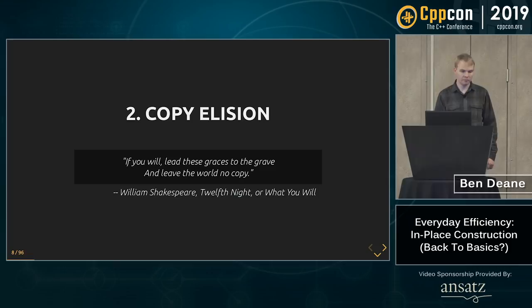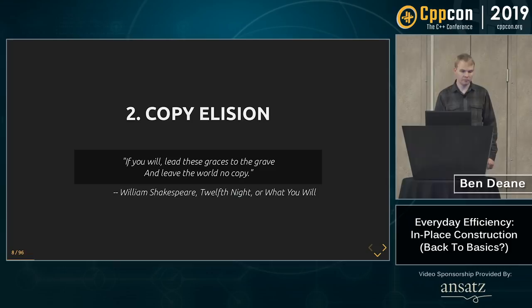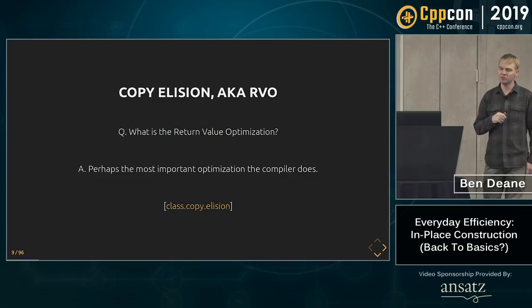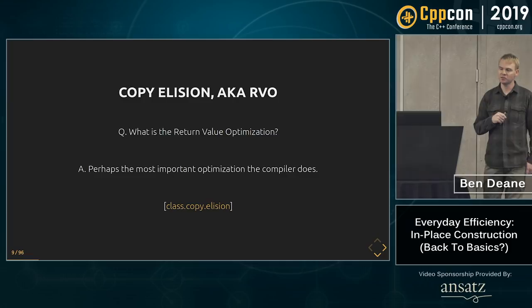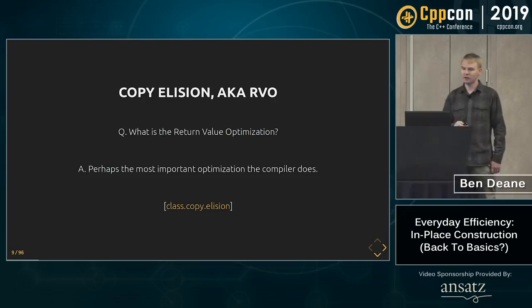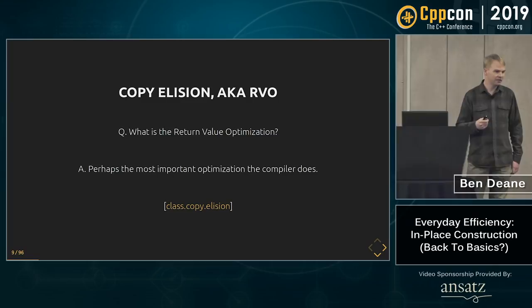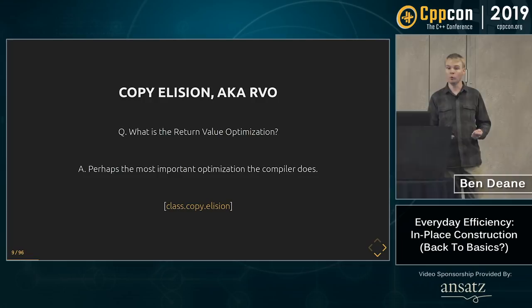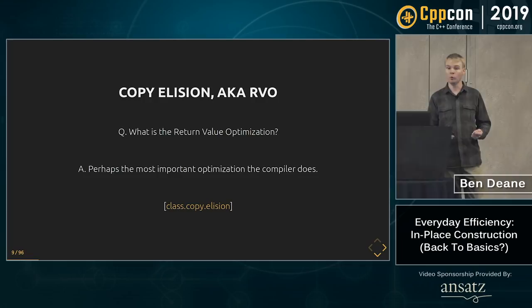RVO is probably the most important optimization your compiler does. So important that even though it's only been mandated on rvalues since C++17, all production compilers of any note have done it for literally decades. I was trying to find out when it started. I asked Jason Turner — he can't find a compiler in history where it wasn't done. Named RVO went into GCC 3.1, around the year 2000.